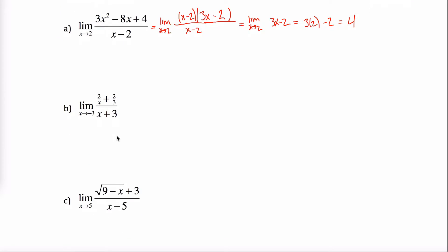This next problem is the complex fraction type — fractions inside fractions. For the limit as x approaches negative 3, you can try plugging in, but you'll get 0 over 0, as is always the case in these problems. So I have to find a way to get rid of this x plus 3; there must be an x plus 3 hidden up in the numerator. The way to get there is to first get a common denominator.